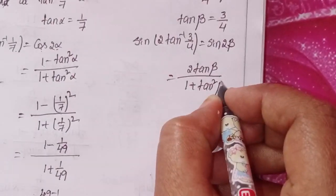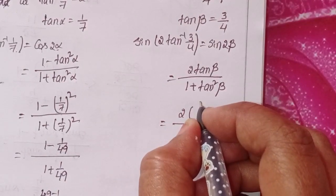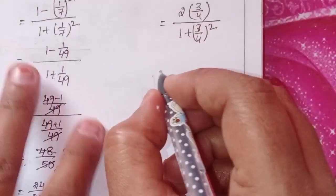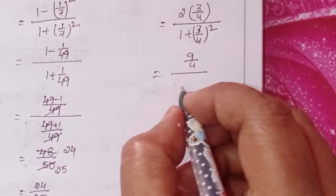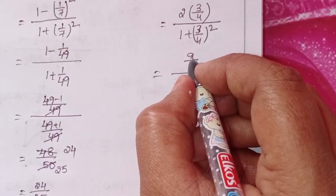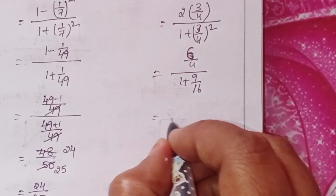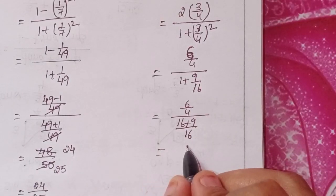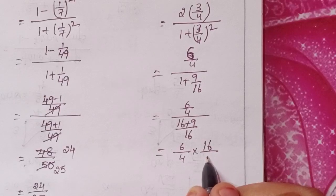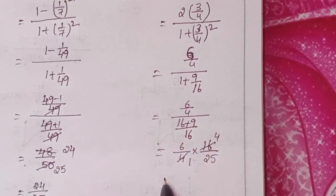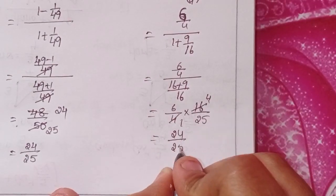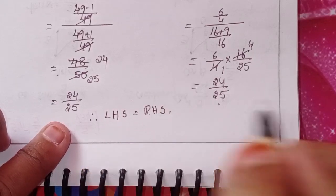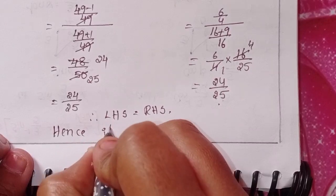Substituting tan beta equals 3 by 4: we get 2 into (3/4) by 1 plus (3/4)², which gives (6/4) by (1 plus 9/16). That simplifies to (6/4) by (25/16), then (6/4) into (16/25), giving 24 by 25. This is RHS. Therefore LHS equals RHS, hence it is proved.